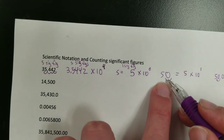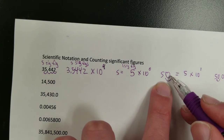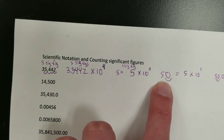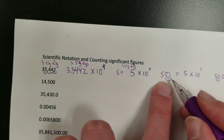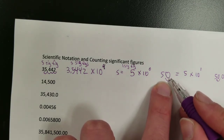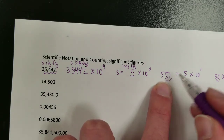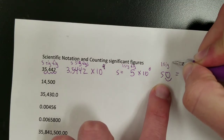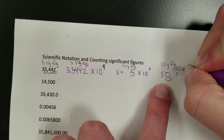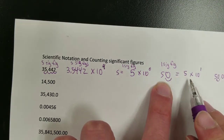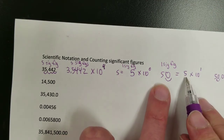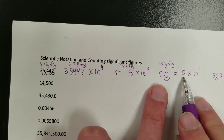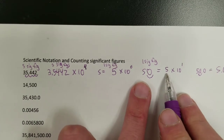The number 50 has zeros at the end. We ignore the zeros at the end if there's no decimal — trailing zeros do not count if there's no decimal. So that's 1 sig fig. You'll notice that's why there's only one number in the scientific notation: it's 1 sig fig.